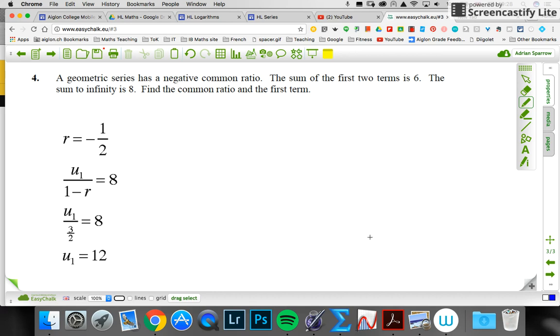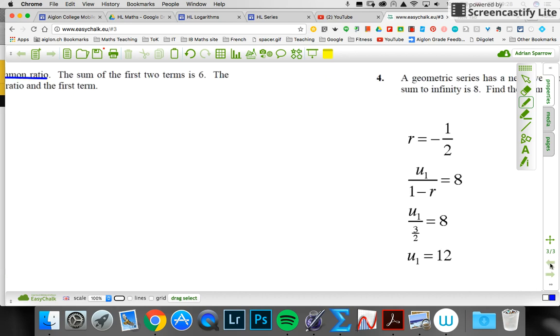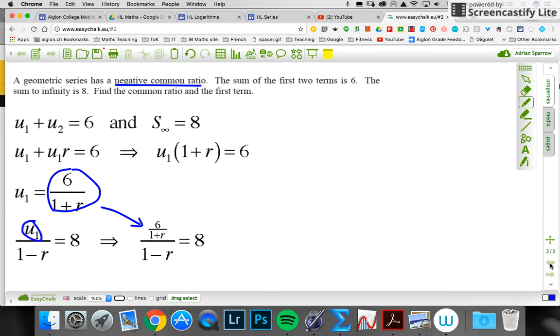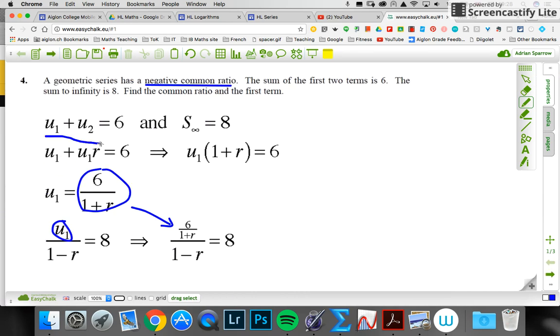Tips to working out this question really are to get started and write down the things that we know. We know that u₁ plus u₂ is six, and the sum to infinity is eight. It's a matter of treating it as simultaneous equations because you've got u₁ and r that you don't know. It's just a matter of working through it and doing the quadratics.